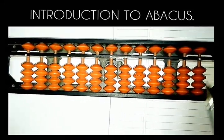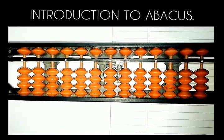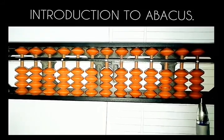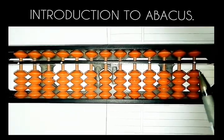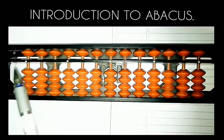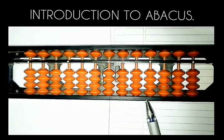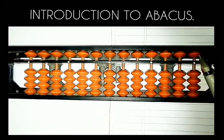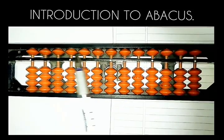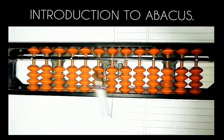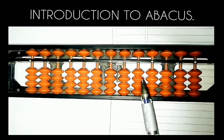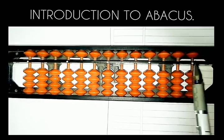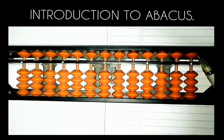As we can see on all rods, we have four individual beads in the lower part of the Abacus. Lower part means the part below the unit bar or answer line. We have one individual bead on each rod on the upper side of the bar. So there are total five beads on each rod.